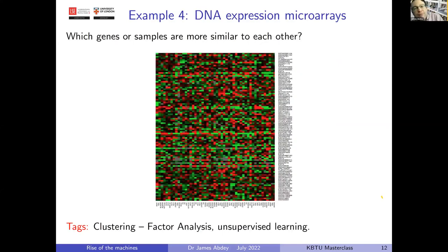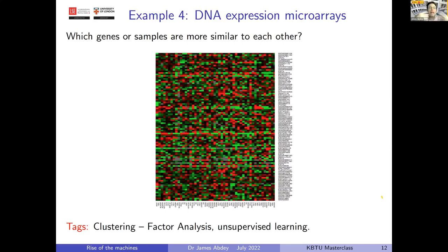Looking at DNA expressions: note the use of color in visualizations — very powerful for storytelling. The intensity of shading indicates differences in order of magnitude. Here there is no clearly defined dependent variable; we're just looking for similarities, both column-wise and row-wise. Can we cluster similar columns or rows to identify genes or DNA samples that are sufficiently similar, indicating individuals who may face similar risks of developing particular illnesses later on?